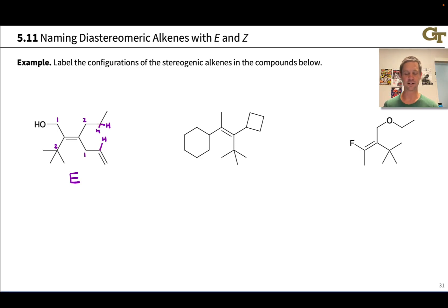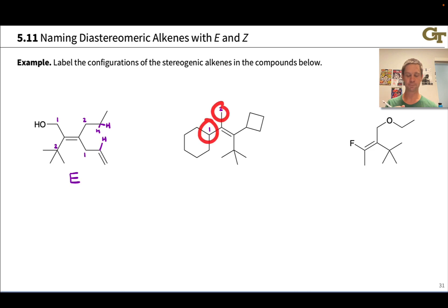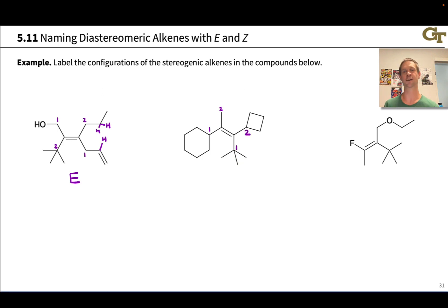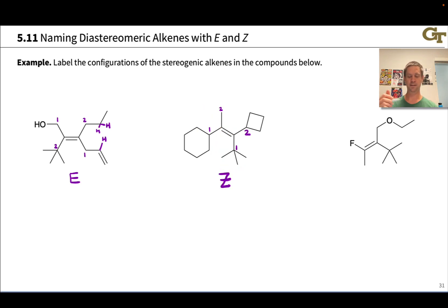In the second example, we have an H, C, and C versus a CH3, so the bottom group gets higher priority than the CH3 group. At the other carbon of the alkene, we have C, C, H versus C, C, C, so the tert-butyl group gets higher priority there. Focusing on the higher priority groups and how they're oriented, they are on the same side of the carbon-carbon double bond. This is a Z alkene.